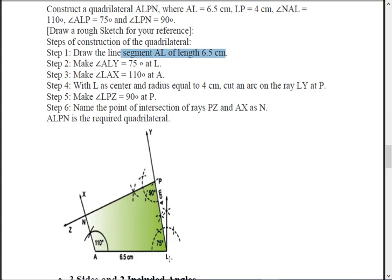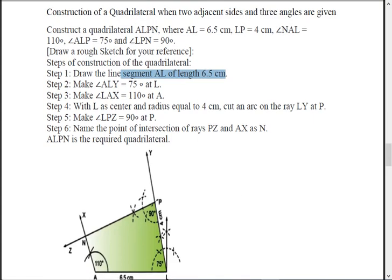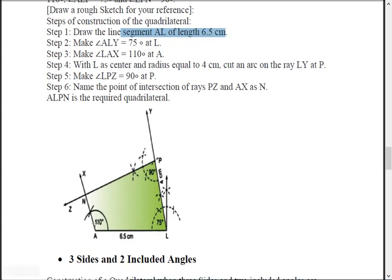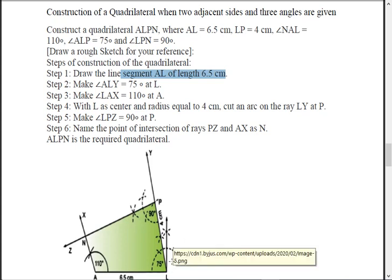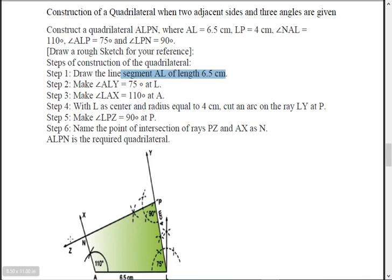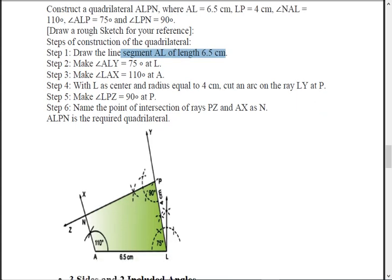Draw AL = 6.5. You know angle NAL, so from A take 110 degrees and draw a ray. You also know angle ALP, so from L take 75 degrees and draw a ray — now you have two rays. You want point P: LP = 4, so take an arc of 4 from L and mark it on the ray to get point P. Then since angle LPN = 90 degrees is given, take 90 degrees from P and draw the final line. Even if you start with LP, you'll get the same quadrilateral, just tilted.